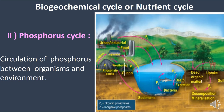Phosphorus exists in the biosphere in rocks, rock deposits, marine sediments, etc. In agriculture, fertilizers are used which contain phosphorus. Phosphorus exists as inorganic phosphates (Pi) and organic phosphates (Po).